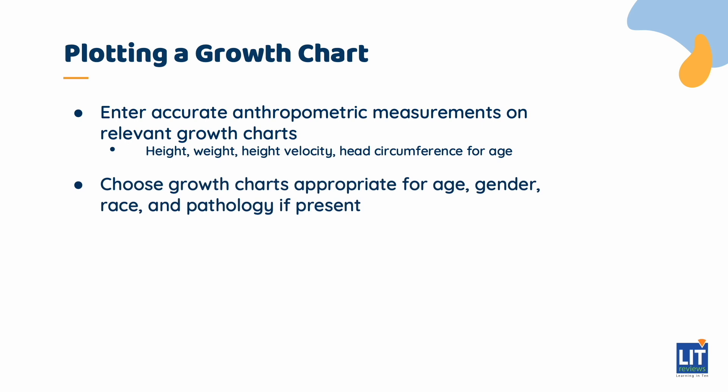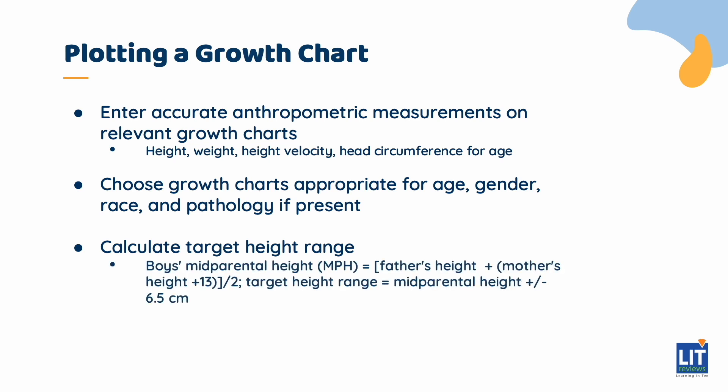There are gender-specific growth charts and growth charts specific for various conditions such as Turner syndrome, as well as charts which include local normative values. It is necessary to also calculate the gender-specific mid-parental height as well as the target centile range, which is defined by values ±1 standard deviation from the mid-parental height. For example, if the patient is a boy, mid-parental height may be calculated by averaging his father's height and the mother's masculinized height — i.e., by adding 13 cm to her actual height. The target centile range is ±6.5 cm from the calculated mid-parental height.